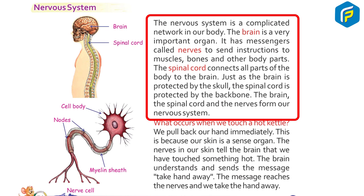The nervous system is a complicated network in our body. The brain is a very important organ with messengers called nerves that send instructions to muscles, bones, and other body parts. The spinal cord connects all parts of the body to the brain. Just as the brain is protected by the skull, the spinal cord is protected by the backbone. Together, the brain, spinal cord, and nerves form our nervous system.